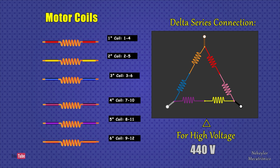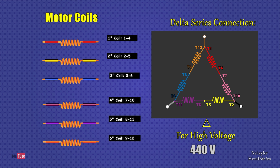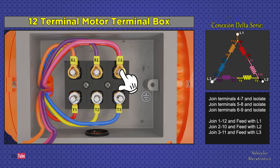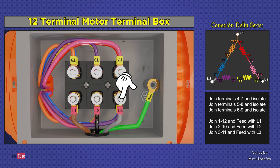Now let's see the series delta configuration, which is used for high voltage. In this configuration, the coils that make up each side of the triangle are connected in series. Clockwise, we have terminals 1 and 4 of the first coil, 2 and 5 of the second coil, 3 and 6 of the third coil, then 7 and 10, 8 and 11, 9 and 12. Terminals 1 through 6 must be placed in the motor terminal box as shown. Then join terminals 4 and 7, join 5 and 8, join 6 and 9. Also join 1 and 12 to feed L1, join 2 and 10 to feed L2, and join 3 and 11 to feed L3.